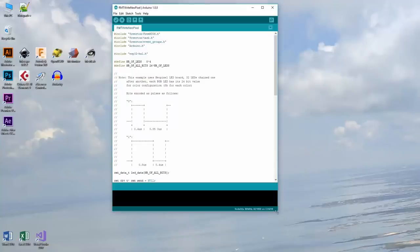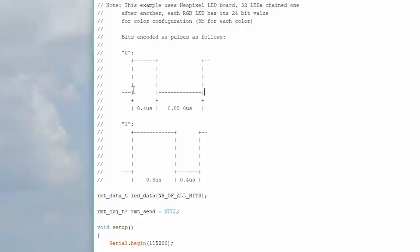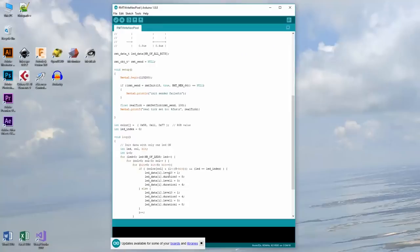So the RMT is a remote control driver, like an infrared remote control like your television would have. Yeah, you can basically program pulse widths intended for infrared communication, but in this case you can use it to drive NeoPixels. So NeoPixels have a rising edge at 800 kilohertz, and then the width of the pulse determines if it's a zero or one. So a short pulse is zero, long pulse is a one.